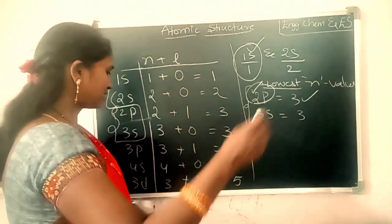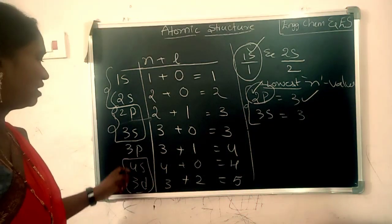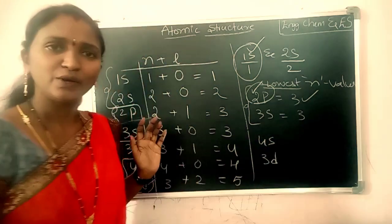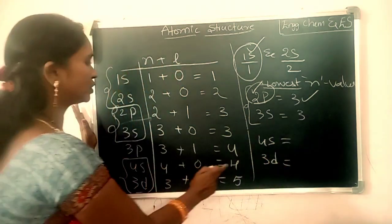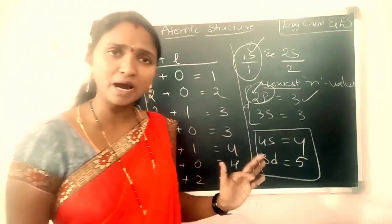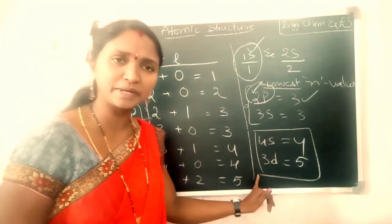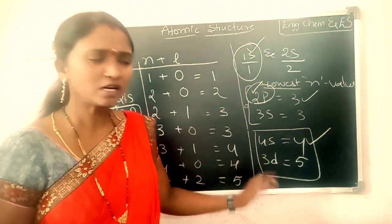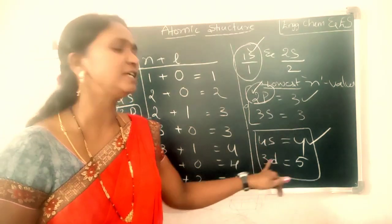Now consider the energies of 4s and 3d according to the Aufbau principle. The n plus l value of 4s is 4, and the n plus l value of 3d is 5. Since 4s has the lower n plus l value, 4s has lower energy than 3d. That's why the 4s orbital is filled before the 3d orbital.